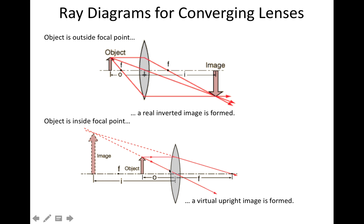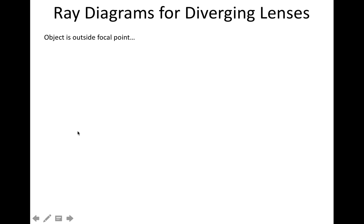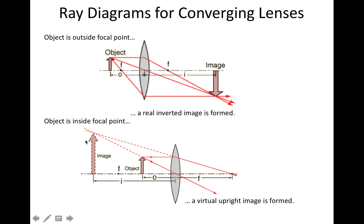And because it's a virtual image, it has a negative image distance. And again, because it's a virtual image, 100% of the time, virtual images are going to be upright. So when the object is inside the focal point, then we end up with a virtual upright image. So that's category two.